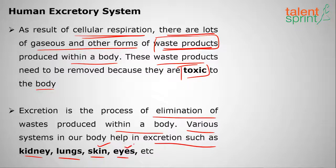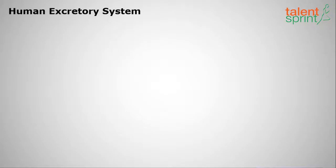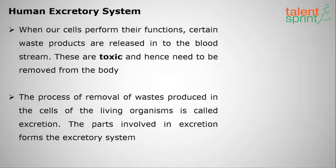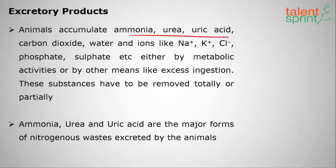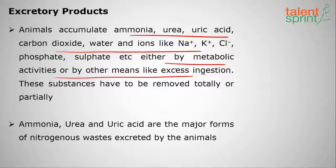Various systems that help in excretion are kidneys, lungs, and skin. We excrete sweat through the skin, CO2 through the lungs, and waste materials from the blood through the kidneys. The waste products produced in cells are toxic and must be removed — this process is called excretion. Animals accumulate ammonia, urea, uric acid, carbon dioxide, water, and ions like sodium, calcium, chlorine, phosphate, and sulfate, either by metabolic activities or other means like excessive ingestion.